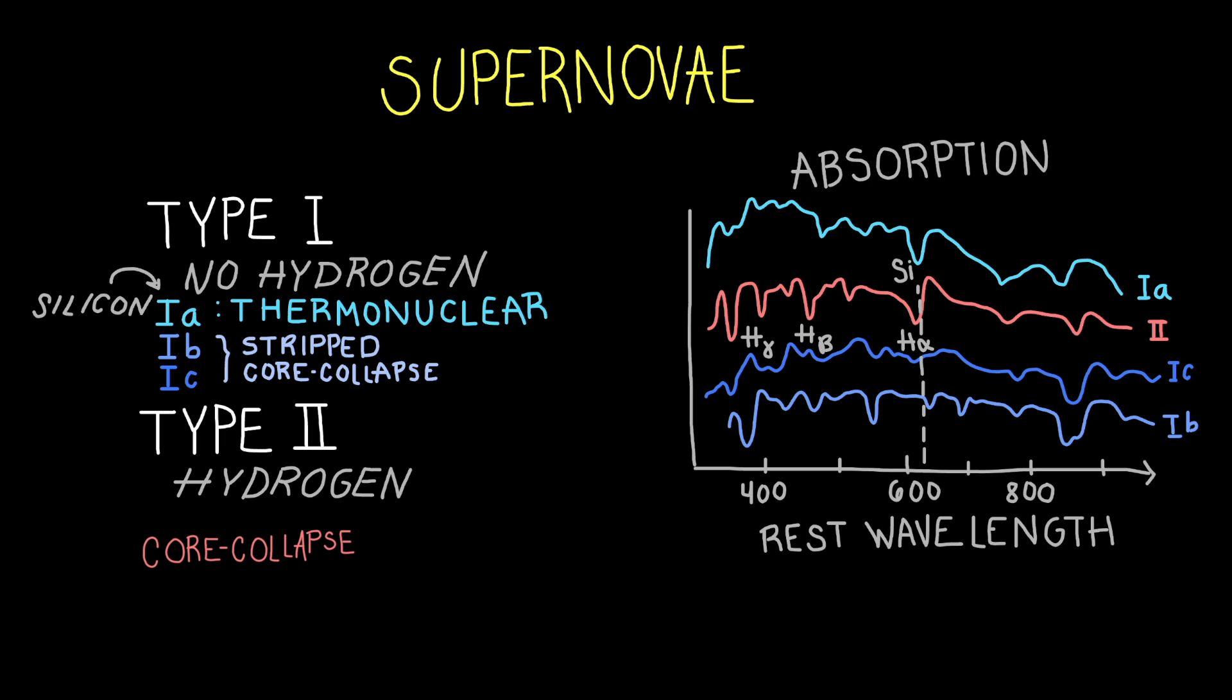However, remember Type I do not have hydrogen—that includes Type Ib and Ic. One of the main differences between Type Ib and Ic supernovae is that Type Ib includes strong helium lines, while Type Ic does not.